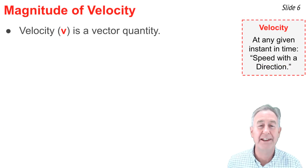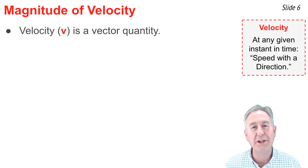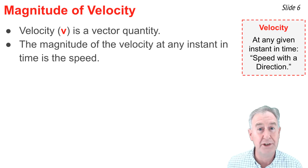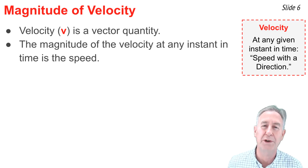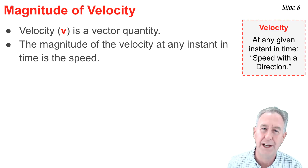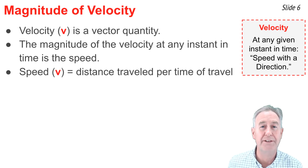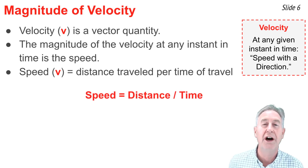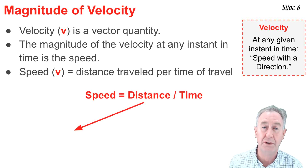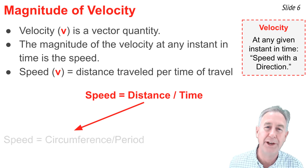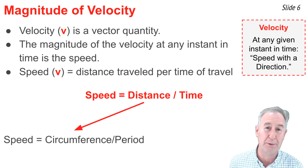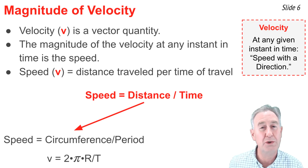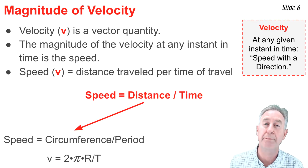Velocity is a vector with a magnitude and a direction. The magnitude of the velocity at any given instant is simply the speed of the object — the speedometer reading plus the direction. On average, speed is the distance traveled per time of travel. Oftentimes we know the radius of the circle and the time to go around once, which we call the period. To find the speed, you take the circumference — 2 times pi times radius r — and divide it by the period T, where T is the time to complete one revolution.